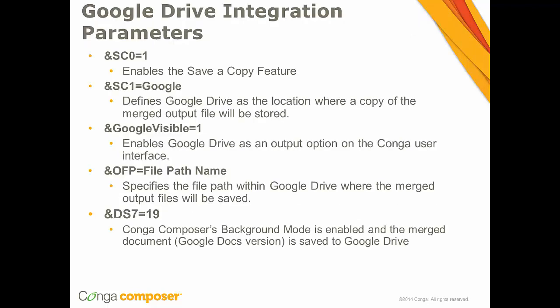Here's a list of the parameters we're going to be working with today. These parameters make it possible for the integration process to happen with Conga Composer and Google Drive. Note that these specific parameters are not just specific to Google. For example, SC1 defines the location of where you would like Conga Composer to store an output file — you can store an output file to attachments, content, Chatter, and Spring CM. We'll walk through how to enable the save-a-copy feature, define the location to be Google Drive, create a Google Doc on the fly using Google Visible, create a file path in Google Drive, and run the process in background mode.